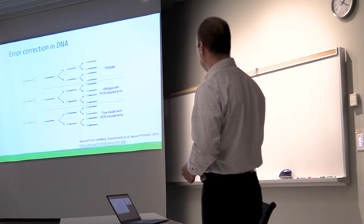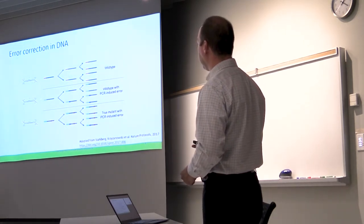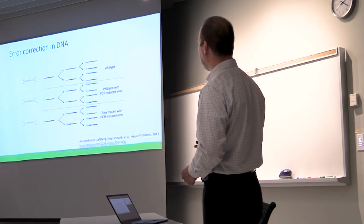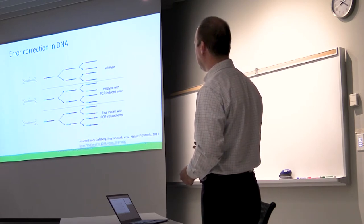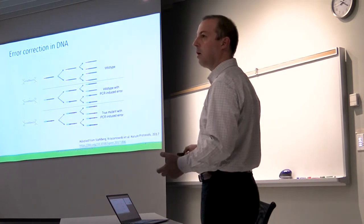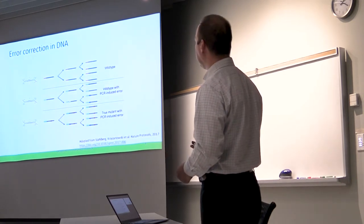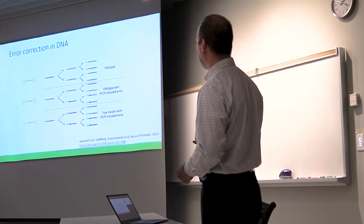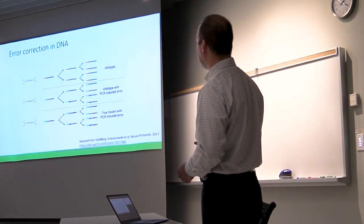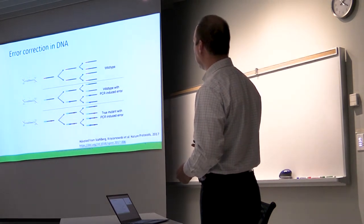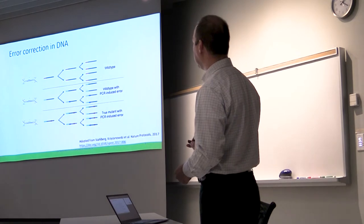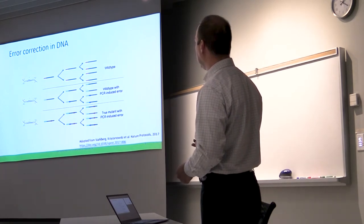Another possibility is you tag a wild type molecule here, and you do PCR, and in one cycle you end up with a mutation or an error occurring in PCR, and then with amplification that gets propagated. So now you have a lot of daughter molecules with the same barcode because you know that they originated from one original molecule, some of which are wild type and some of which have mutations.